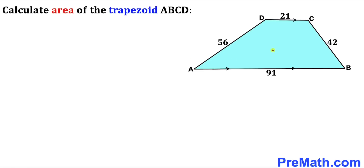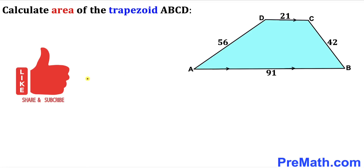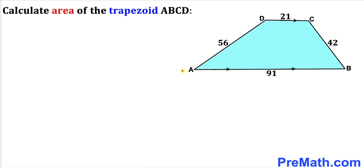Welcome to Pre-Math. In this video we have a blue trapezoid ABCD whose side lengths are 91, 42, 21, and 56 units. This side length AB is parallel to side length CD. We are going to calculate the area of this blue shaded trapezoid ABCD. Note that this figure may not be 100% true to scale.